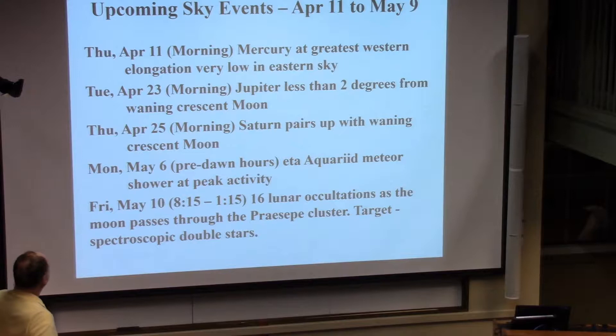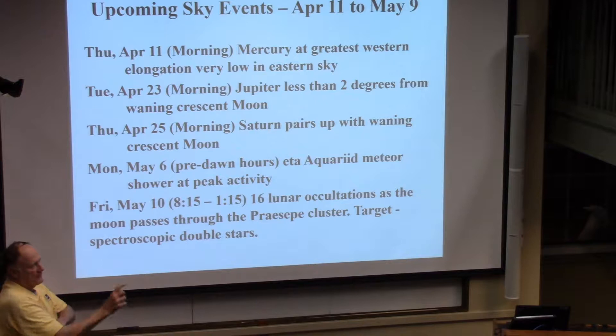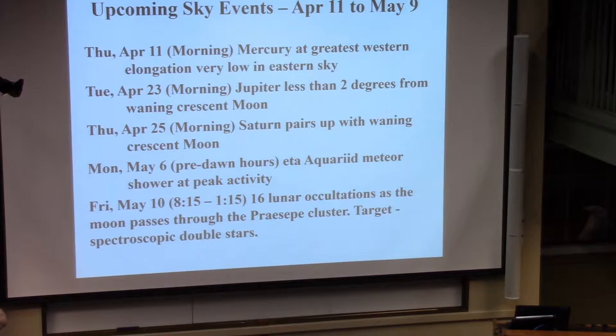April 23rd in the morning, Jupiter is less than two degrees from the waning crescent moon. That's a nice pair. I sent out a discuss list. Jupiter is transiting early in the morning now, right before sunrise. There are maybe a half a dozen opportunities to see the red spot transiting the central meridian of Jupiter if you're an early-to-rise kind of person. The red spot is very vivid this year, very easy to see in almost any size telescope.